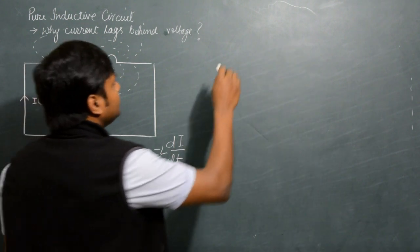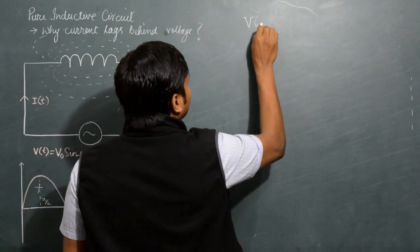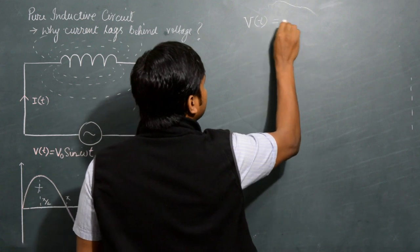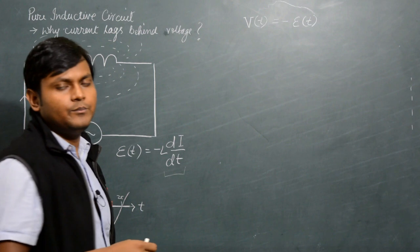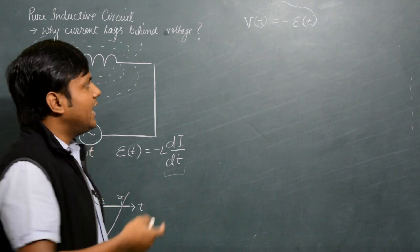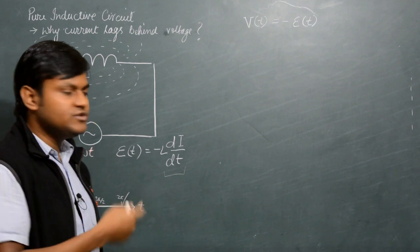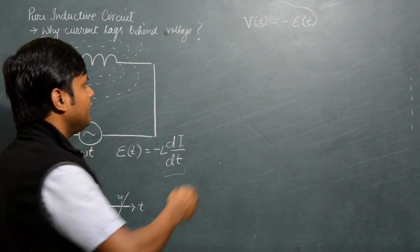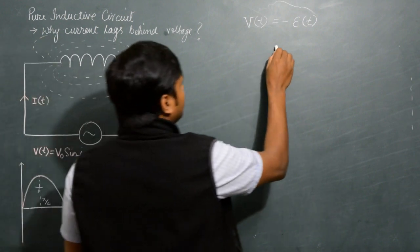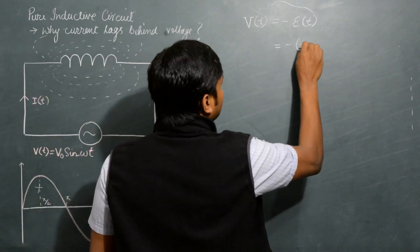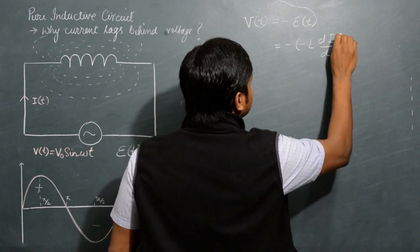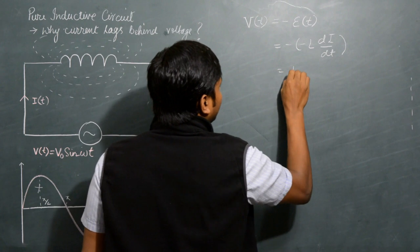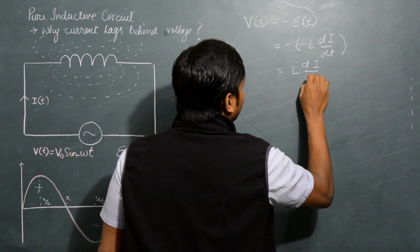So we can write that V(t) equals negative E(t), where V is the voltage source and E is the secondary voltage induced inside the inductor. If I write this expression, it becomes minus minus L di/dt, which becomes L di/dt.